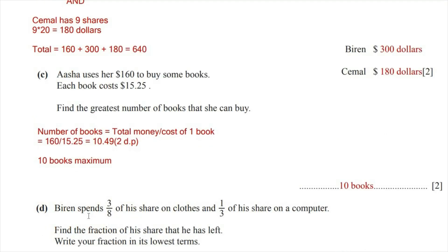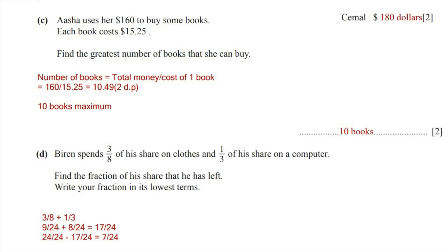Question one, part D: Viran spends 3/8 of his share on clothes and 1/3 of his share on a computer. Find the fraction of his share that he has left, written in its lowest terms. First, we find the total fraction spent on clothes and computer by adding 3/8 and 1/3. We equate the denominators and add the numerators, giving a total of 17/24 spent.